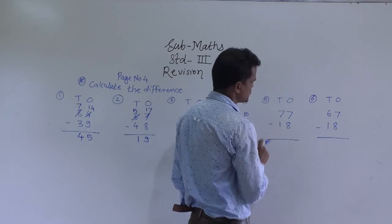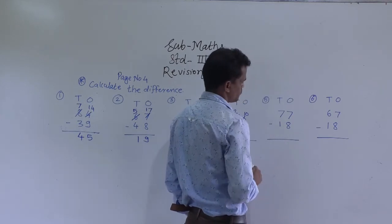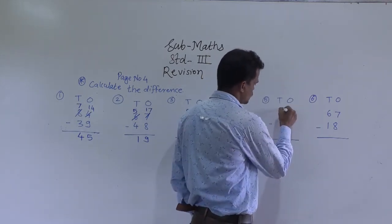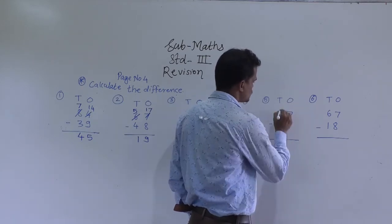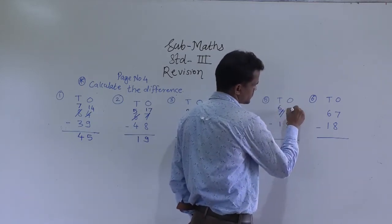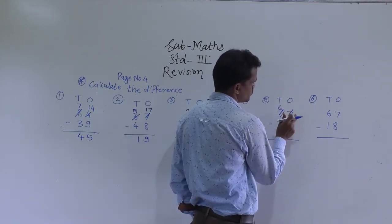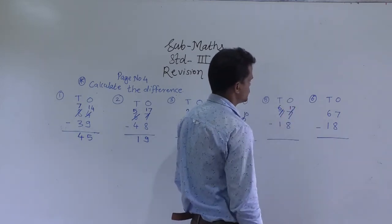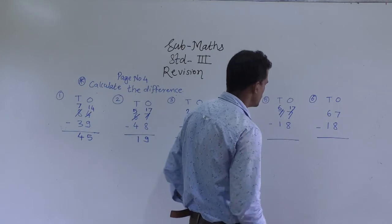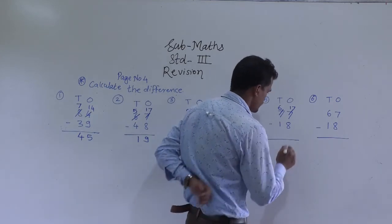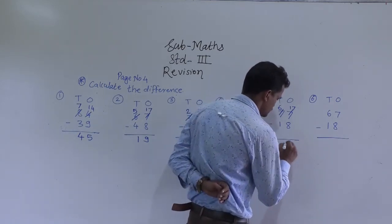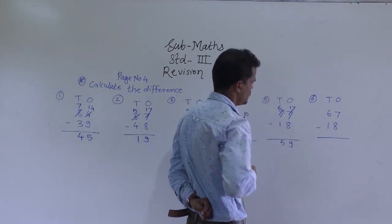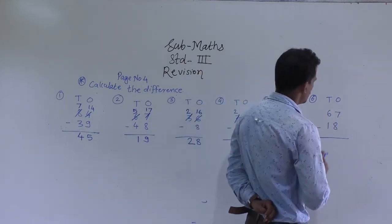Next example: 77 minus 18. 7 minus 8 is not possible. So, regroup this 7 tens into 6 tens and 10 ones. Add those 10 ones into this 7 ones to get 17 ones. Now 17 minus 8 is 9, and 6 minus 1 is 5. So 59 is the answer.